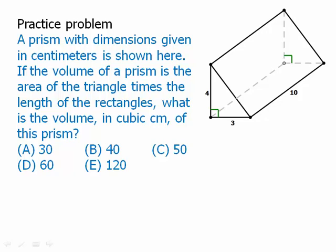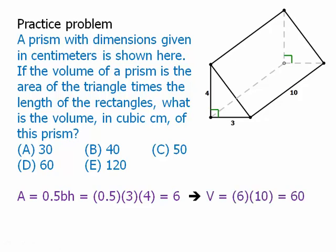Well, first of all, we need to find the area of that base. The area of that base — that's just a triangle. Area equals one-half base times height: three times four. So that's half of twelve, which is six. That's the area of the triangle. And then that length is ten. So the volume is six times ten, which is sixty. That's the answer.